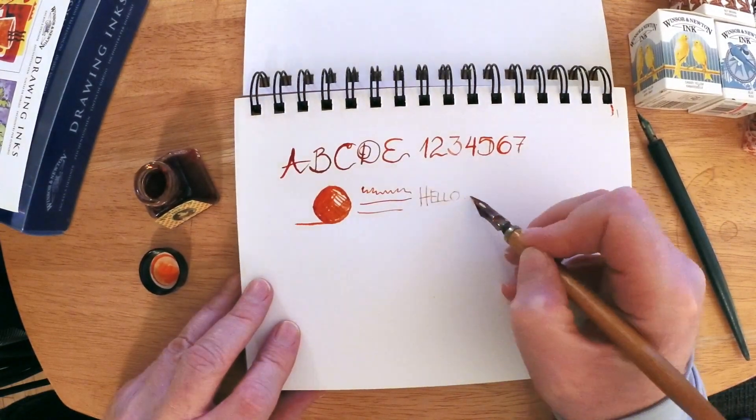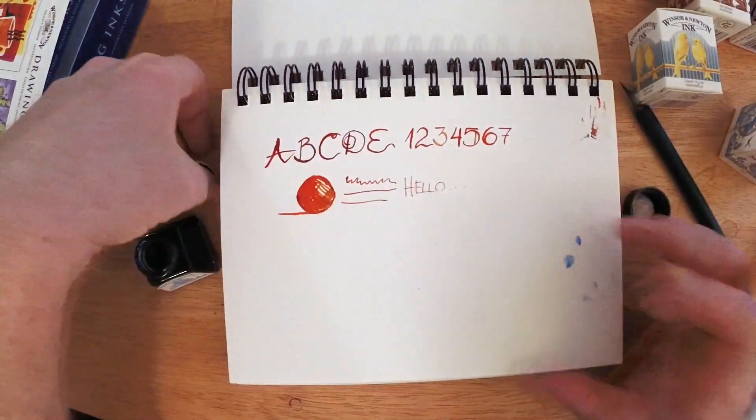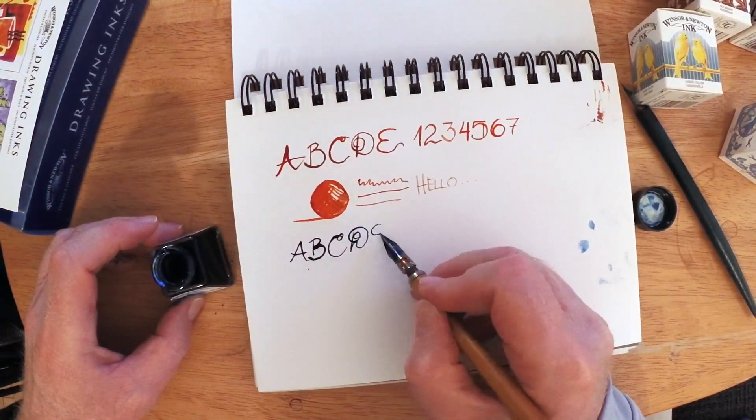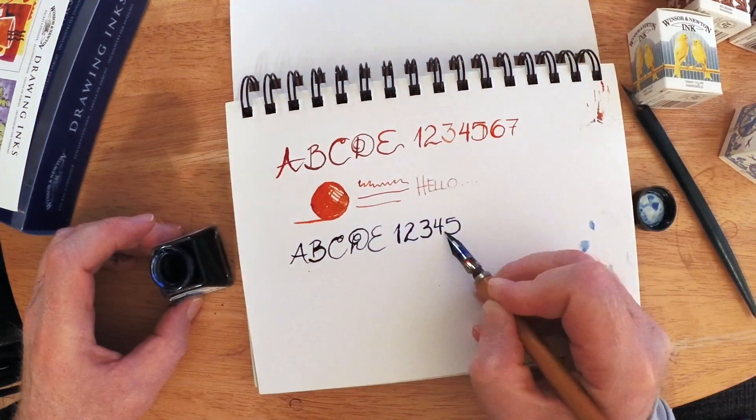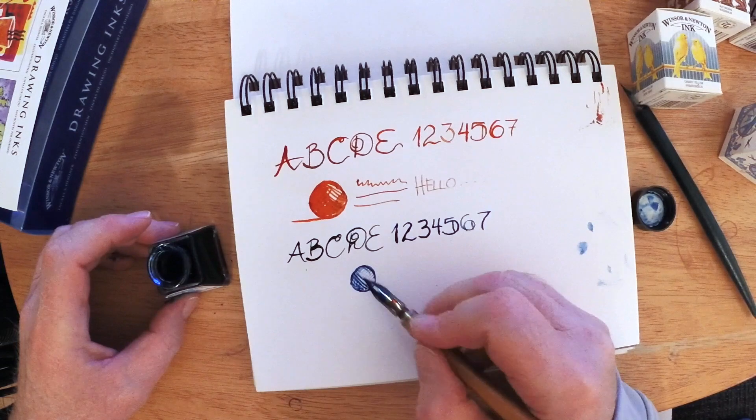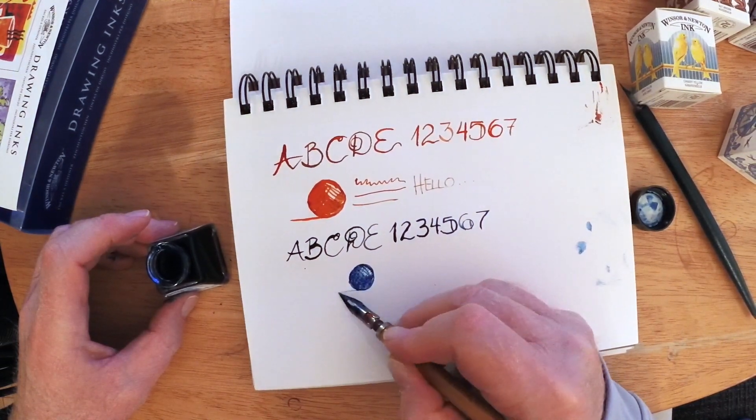I'll draw some lines here. And you can see as the ink runs out, it just kind of runs out. Every once in a while, it'll pick up a little paper because the tip of the nib on this pen is very sharp.